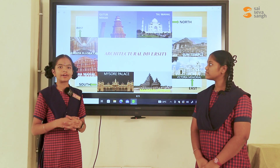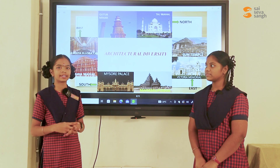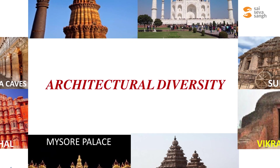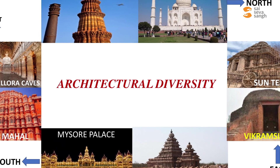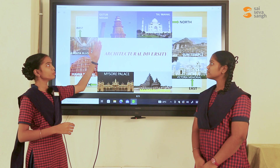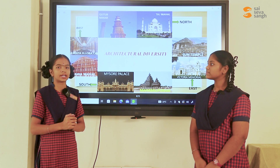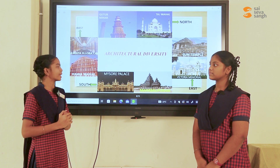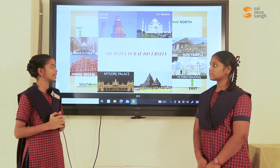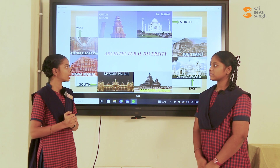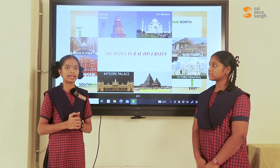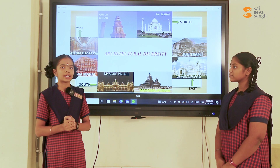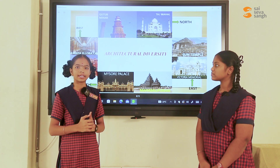Architectural diversity. In India, we have several architectural styles and traditions. The main ones are Indo-Islamic, Hindu temple, Rajput, Indian, and South Indian architectures. Qutub Minar and Taj Mahal belong to the Indo-Islamic style. Ajanta and Ellora caves belong to the Hindu temple style. Hawa Mahal belongs to Rajput architecture. Mysore Palace is a mixture of British and Mughal styles. Mahabalipuram belongs to Indian architecture. Victoria Memorial is a mixture of British, Mughal, and Rajput architecture. The Sun Temple belongs to the Kalinga architecture.